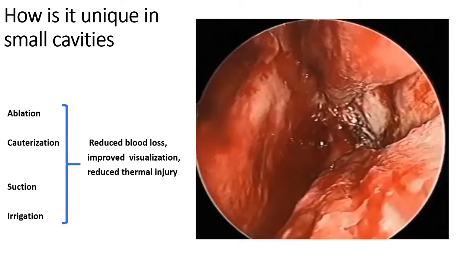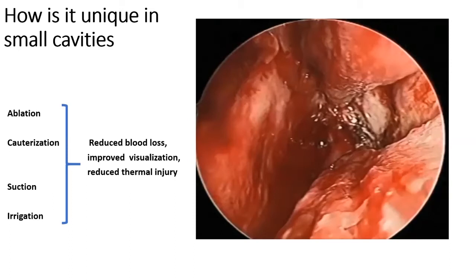Coblation works here in four ways — it washes off the blood, sucks it so you can identify where the vessel is coming from, locates it, and then coagulates it.